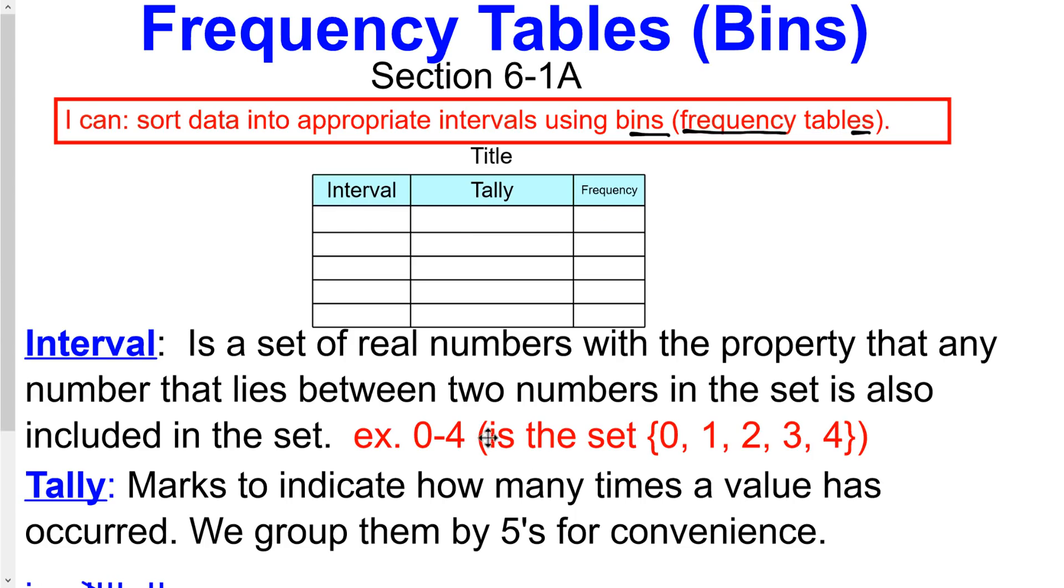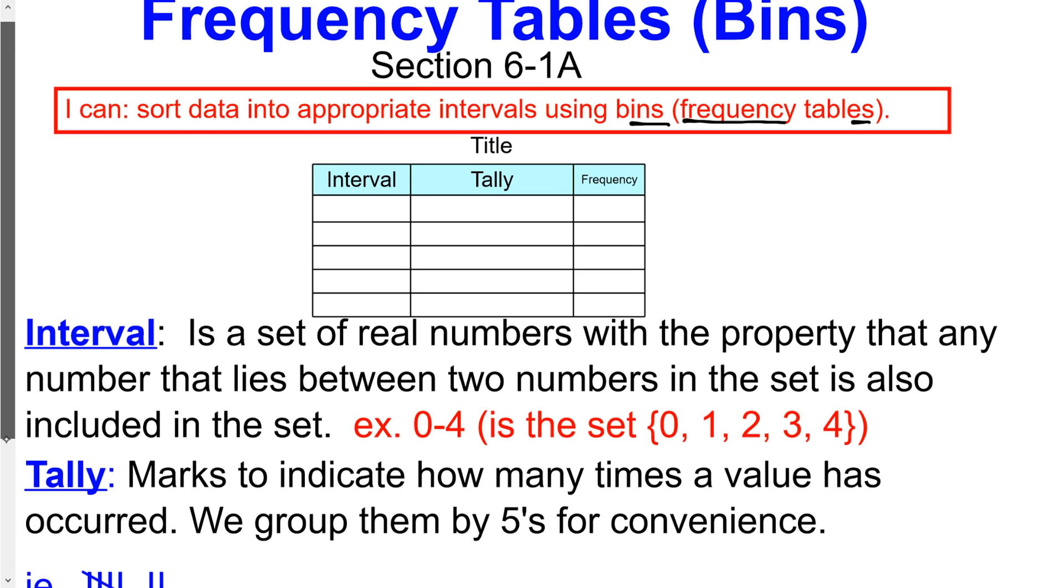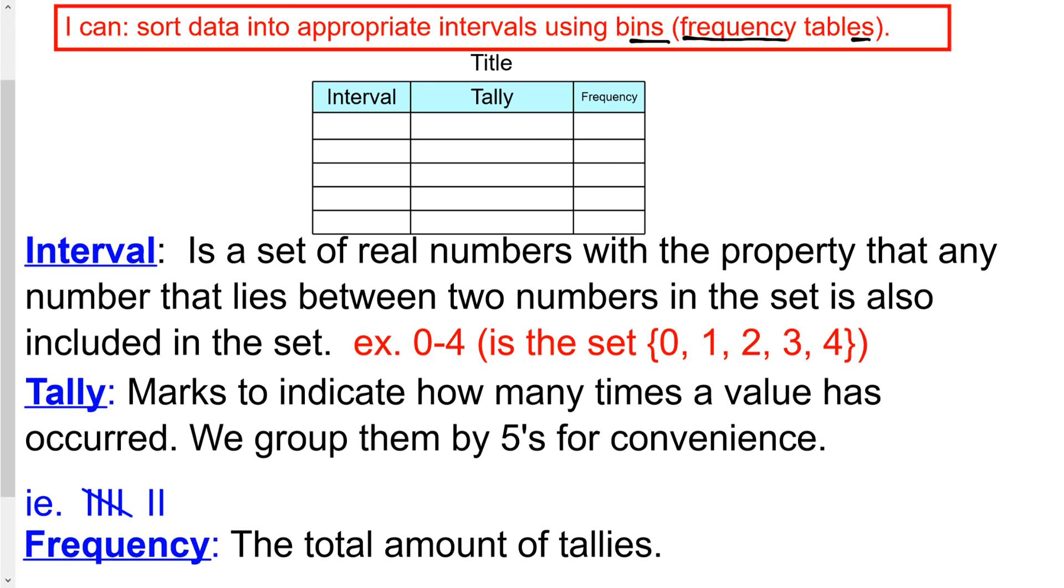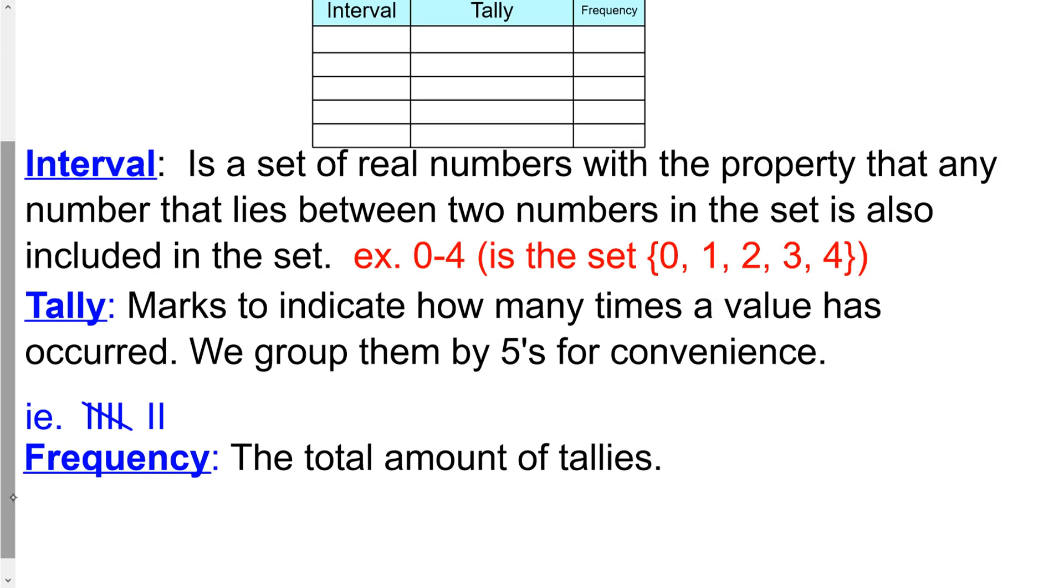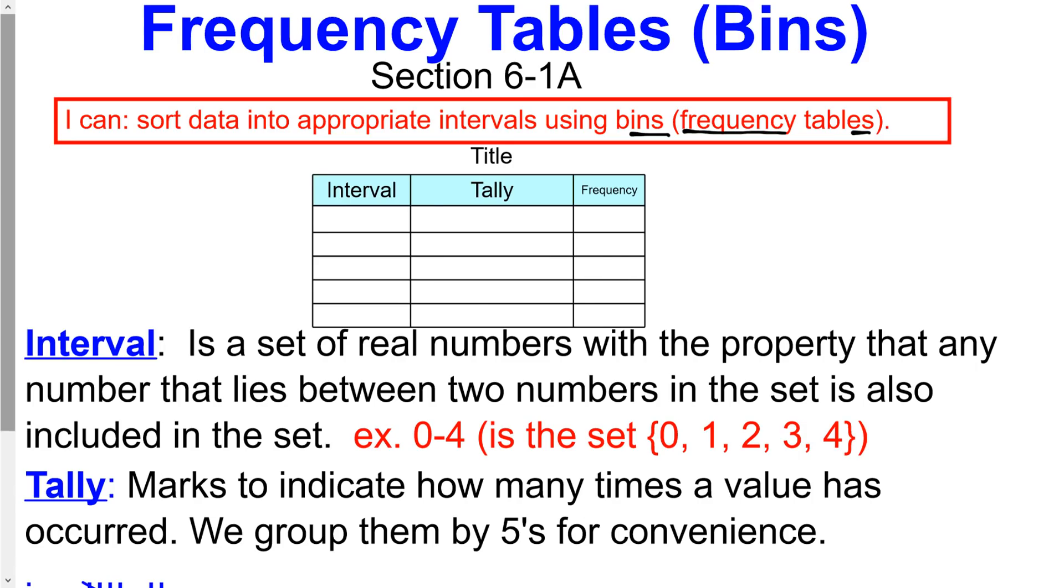So that's what intervals are. It also tells us what tallies are. Tallies are just marks to indicate how many times a value has occurred, like I just showed you. And then lastly, the frequency is just the number of those tallies. Let's get into some examples.